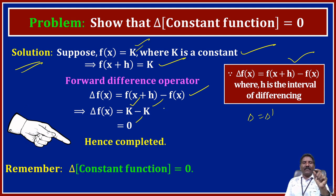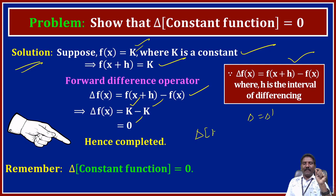The forward difference operator of a constant function is 0. That is, del of k is equal to 0. Very, very important result. Hence completed.